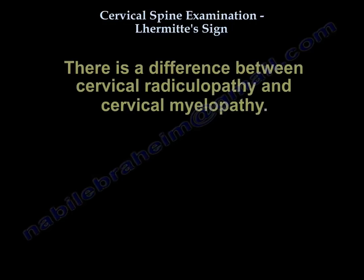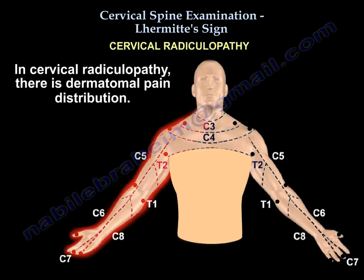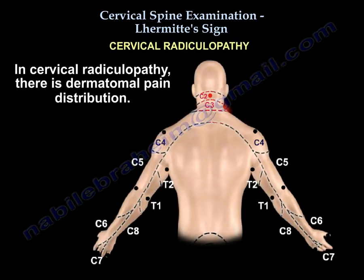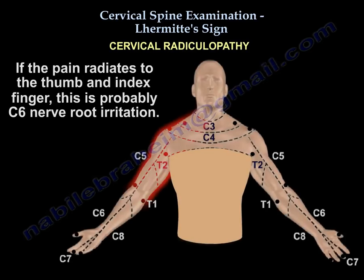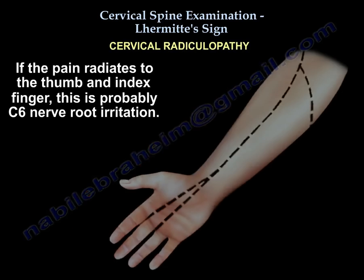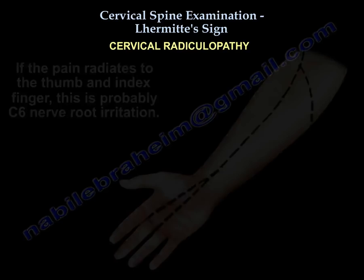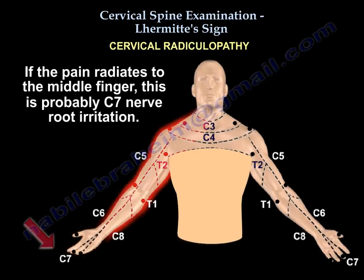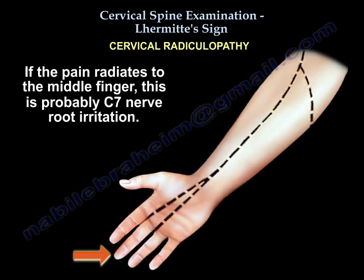There is a difference between cervical radiculopathy and cervical myelopathy. In cervical radiculopathy, there is dermatomal pain distribution. If the pain radiates to the thumb and index finger, this is probably C6 nerve root irritation. If the pain radiates to the middle finger, this is probably C7 nerve root irritation.